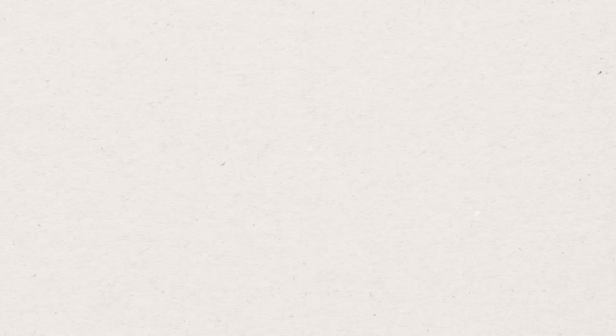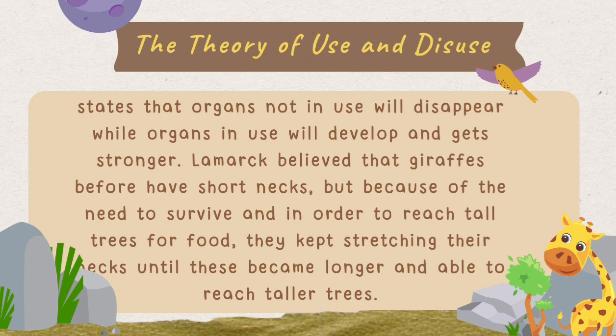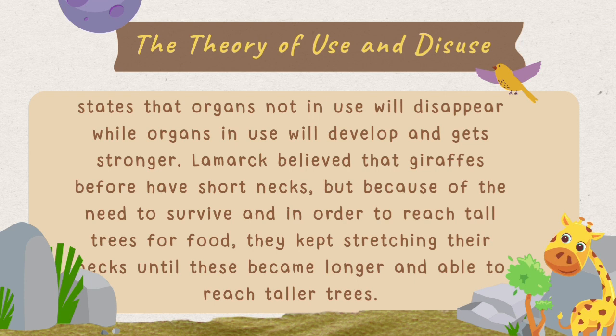Another one is the theory of use and disuse. It states that organs not in use will disappear, while organs in use will develop and get stronger. Lamarck believed that giraffes originally had short necks, but because of the need to survive and reach tall trees for food, they kept stretching their necks until they became longer and able to reach taller trees.